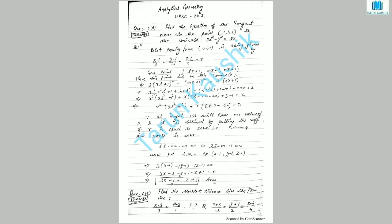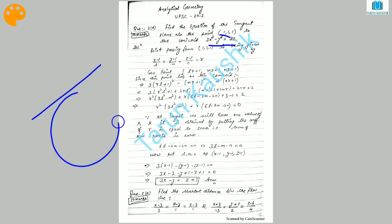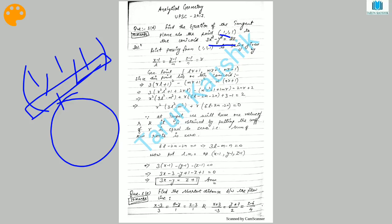The first question of the analytical geometry was: find out the equation of a tangent plane at the point (1,1,1) to the conicoid 3x² - y² = 2z. So we know that this is a tangent plane, this is a conicoid, and this is the point (1,1,1). This is the equation of a plane, and we have to find out the equation of that tangent plane which is touching this conicoid.